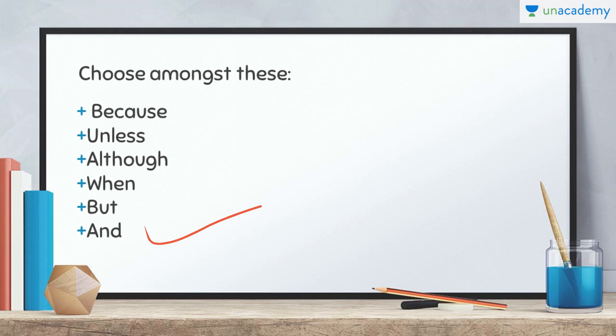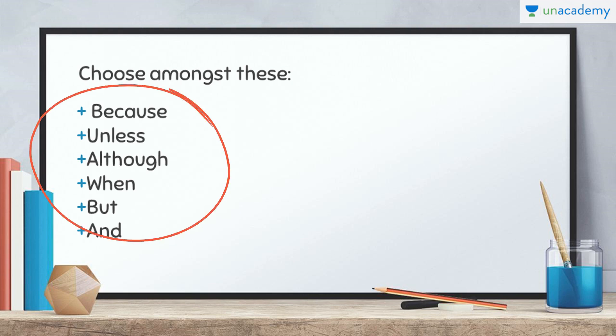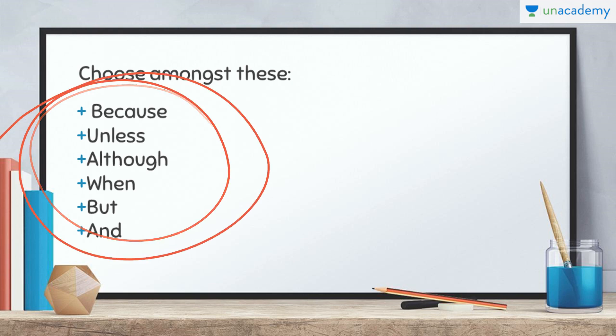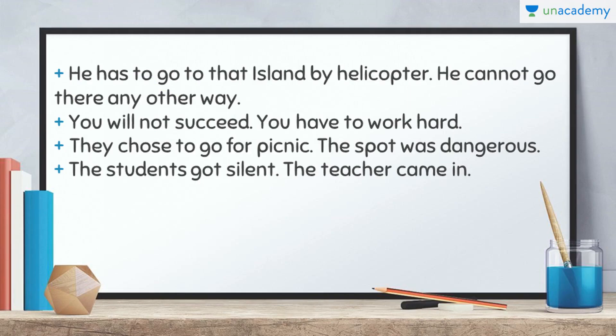Now in this exercise there are sentences. Every question has two sentences and you need to join them. You can pick one right conjunction out of these — and only these — and join them in a manner that they make some sense. I will read out the questions for you. We have 12 questions.